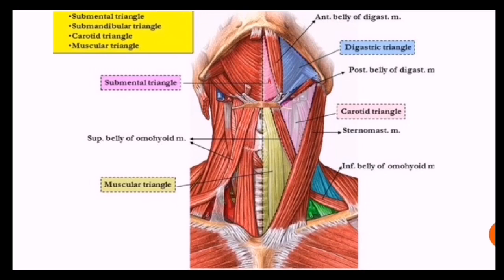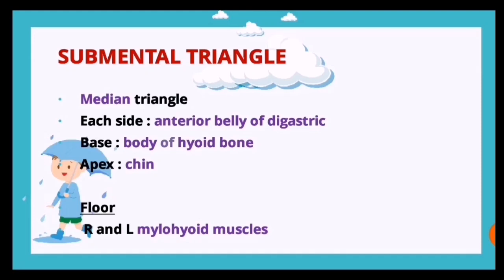This colored picture shows the four triangles: the pink color is the submental triangle, the blue colored triangle between the anterior and posterior belly of digastric is the digastric triangle, the light pink is the carotid triangle, and the green portion is the muscular triangle. The entire portion together is your anterior triangle.